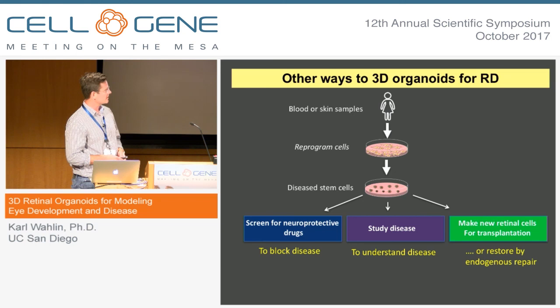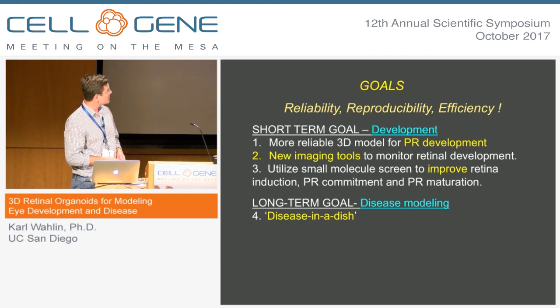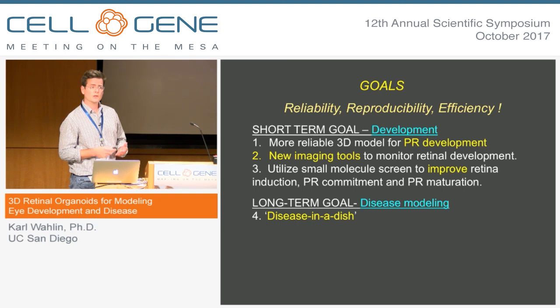Related to that is the possibility to restore retinal function and form through endogenous repair. The goals of our research are improving the reliability, reproducibility, and efficiency of generating 3D organoids in culture. We want more reliable 3D models so we can look at photoreceptor and ganglion cell development.